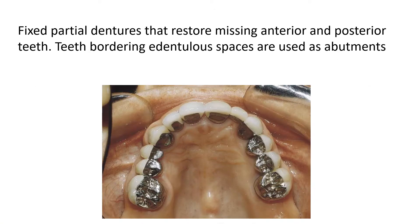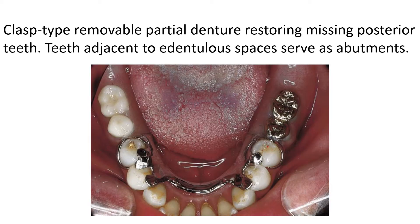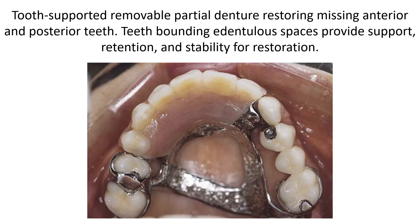Fixed partial dentures restore missing anterior and posterior teeth; teeth bordering edentulous spaces are used as abutments. A clasp-type removable partial denture restores missing posterior teeth; teeth adjacent to edentulous spaces serve as abutments.